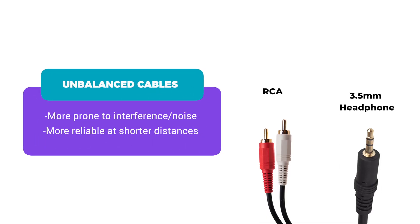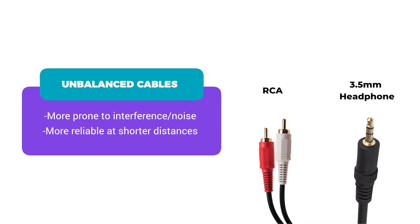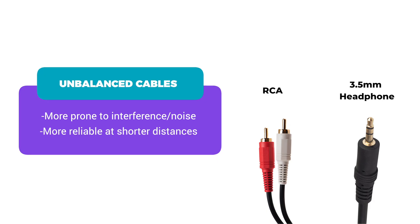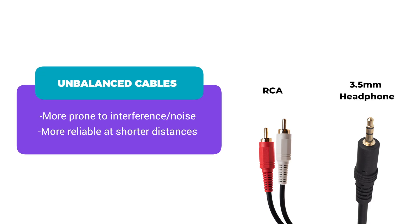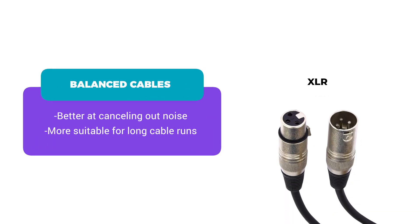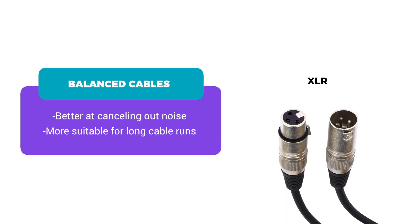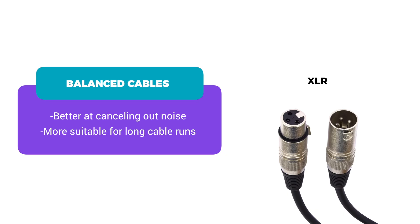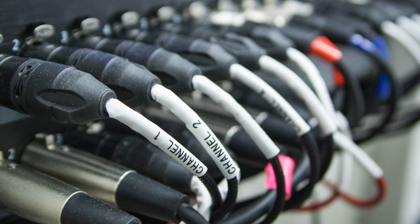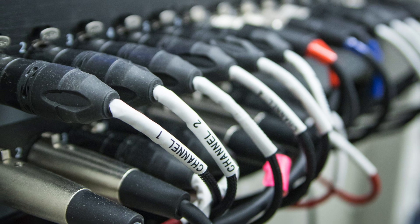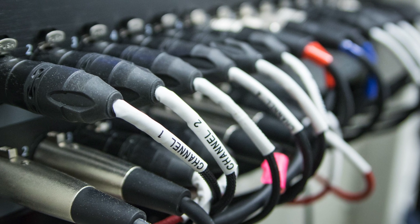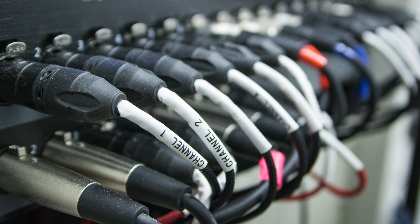Unbalanced cables like RCA and your headphone cable are simple, but they're more prone to interference, making them only good for shorter runs. Balanced cables like XLR have an extra signal wire in them that helps cancel out noise, which is why you'll find them in more professional environments like stages or studios that need longer cable runs.